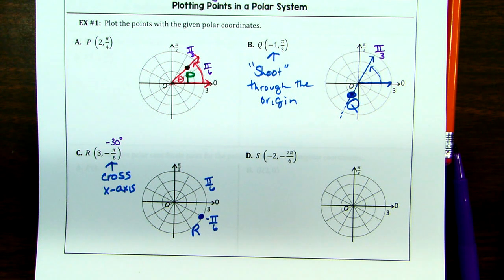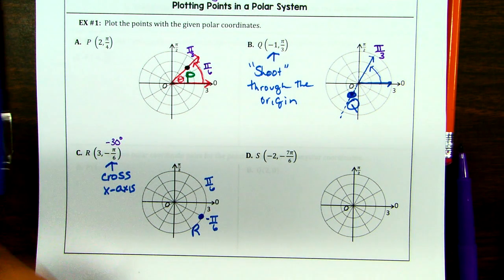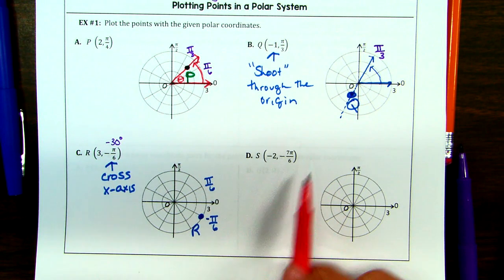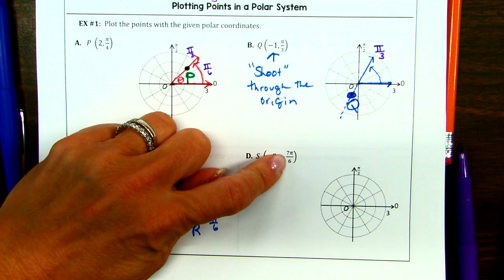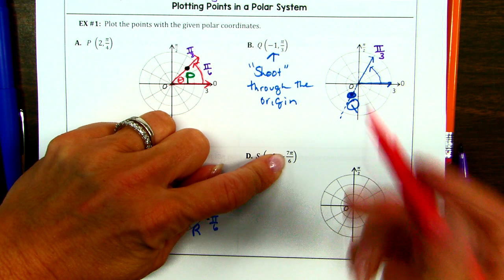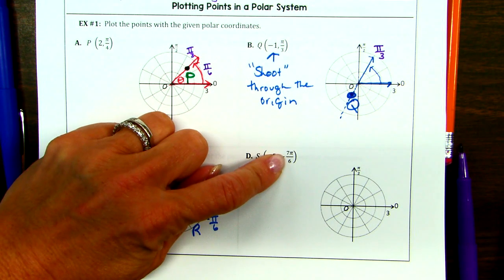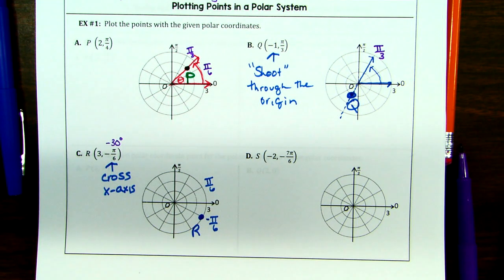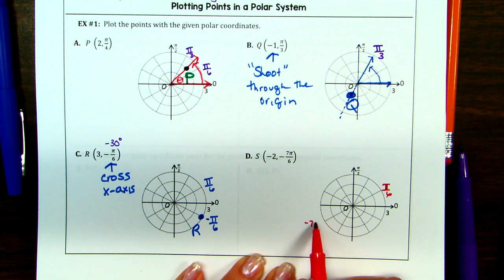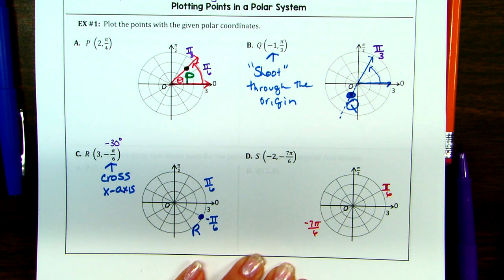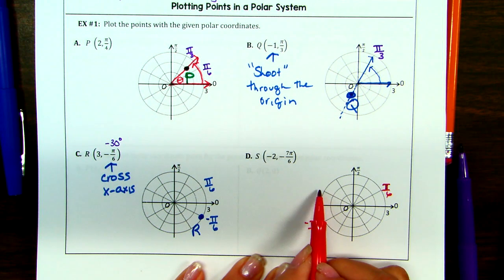What do you do if both are negative? You do both things, and it doesn't matter what order you do them in. Pretend everything's positive — 7 pi over 6 would be quadrant 3. I know it quickly because the numerator is one more than the denominator. My denominators of 6 are around the x-axis.